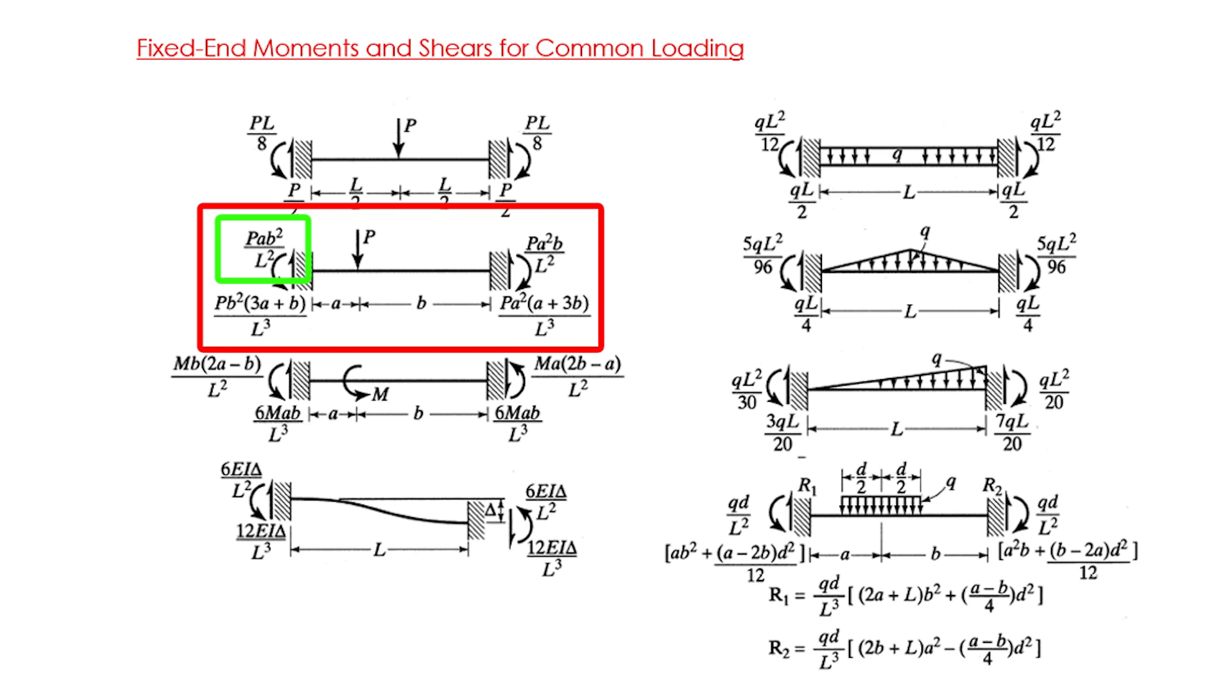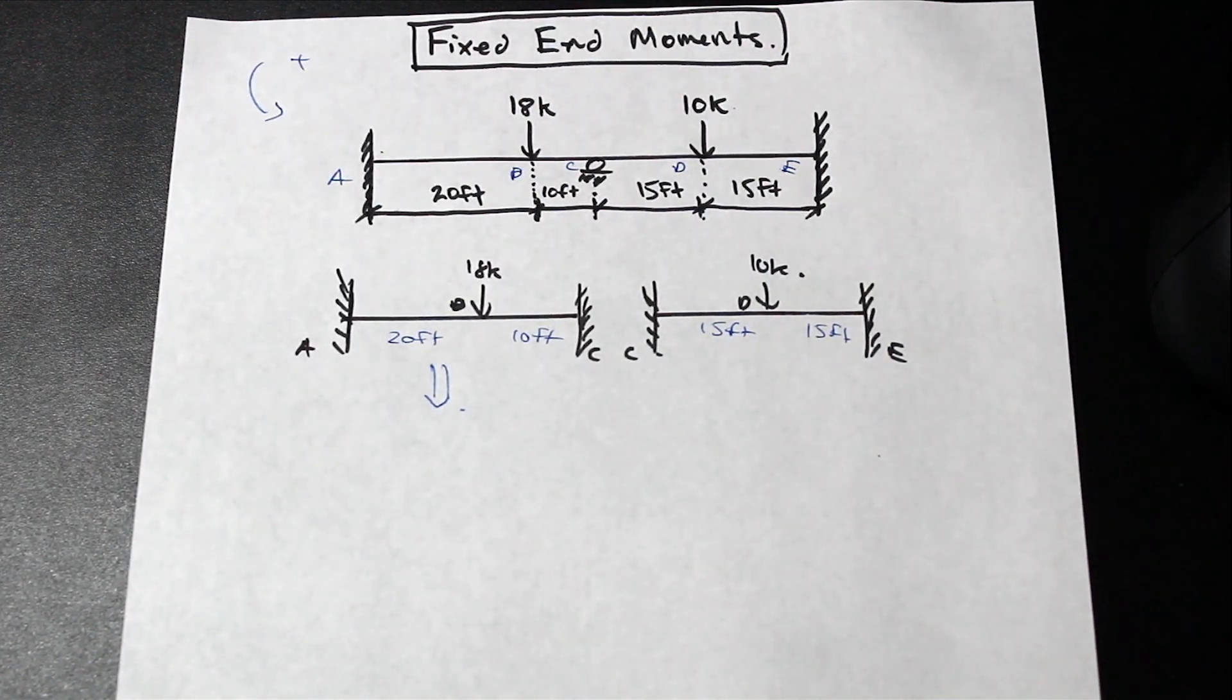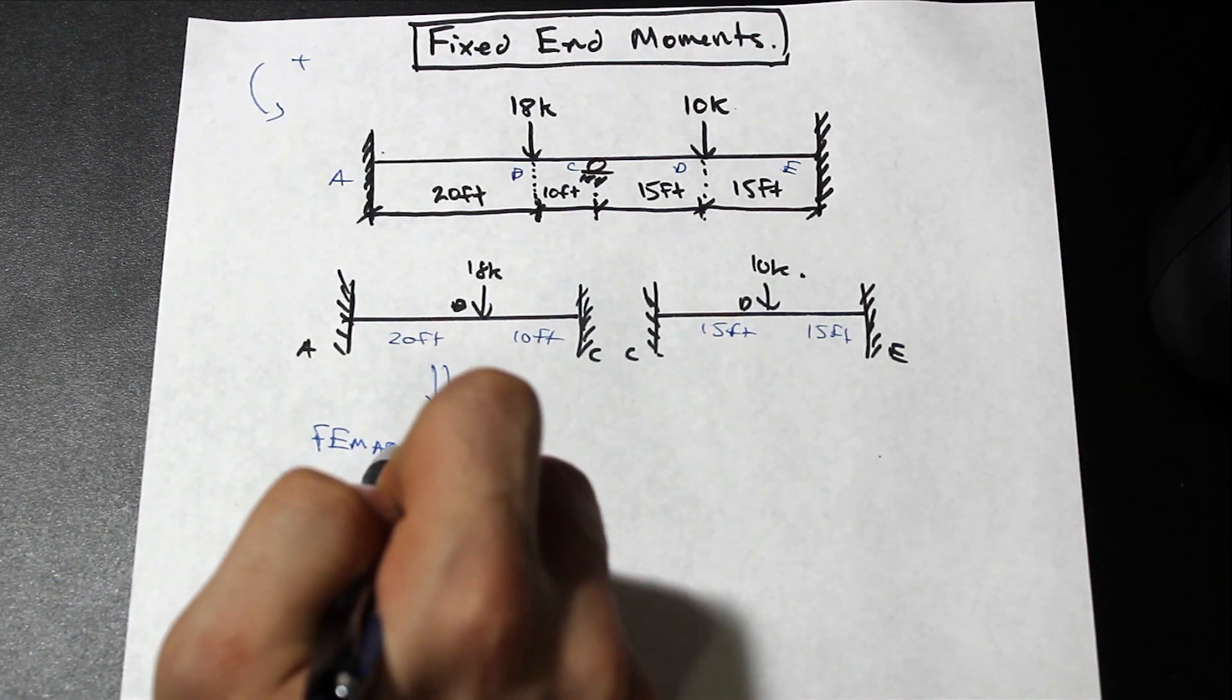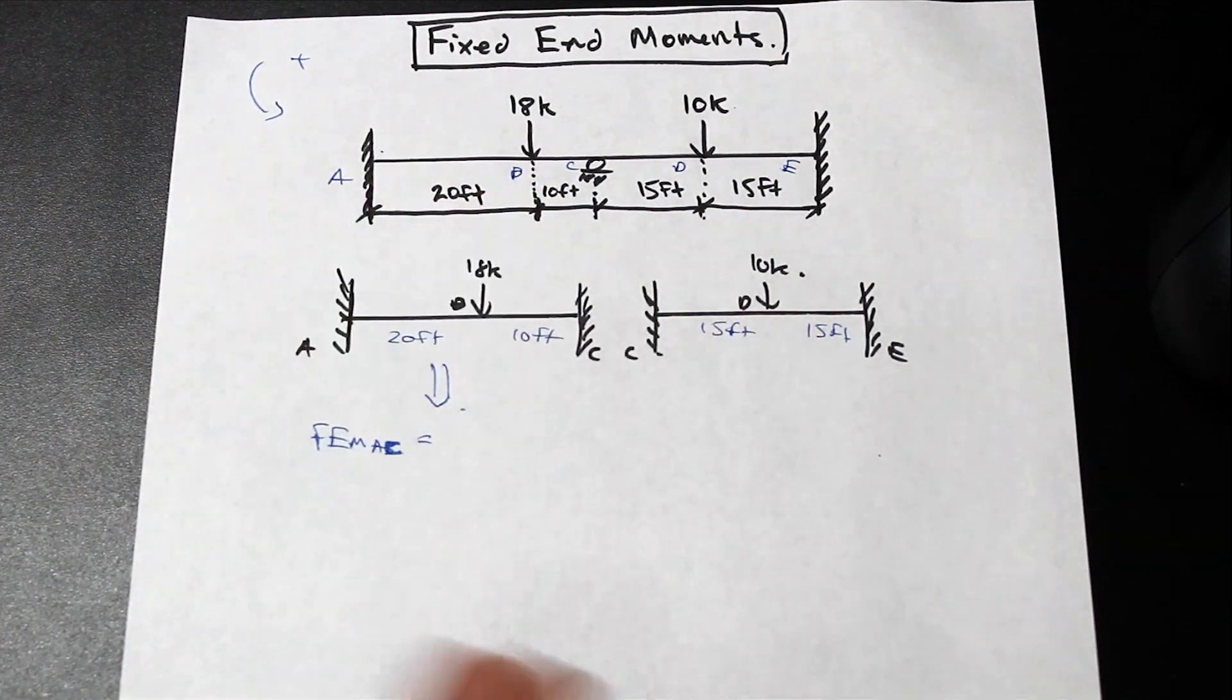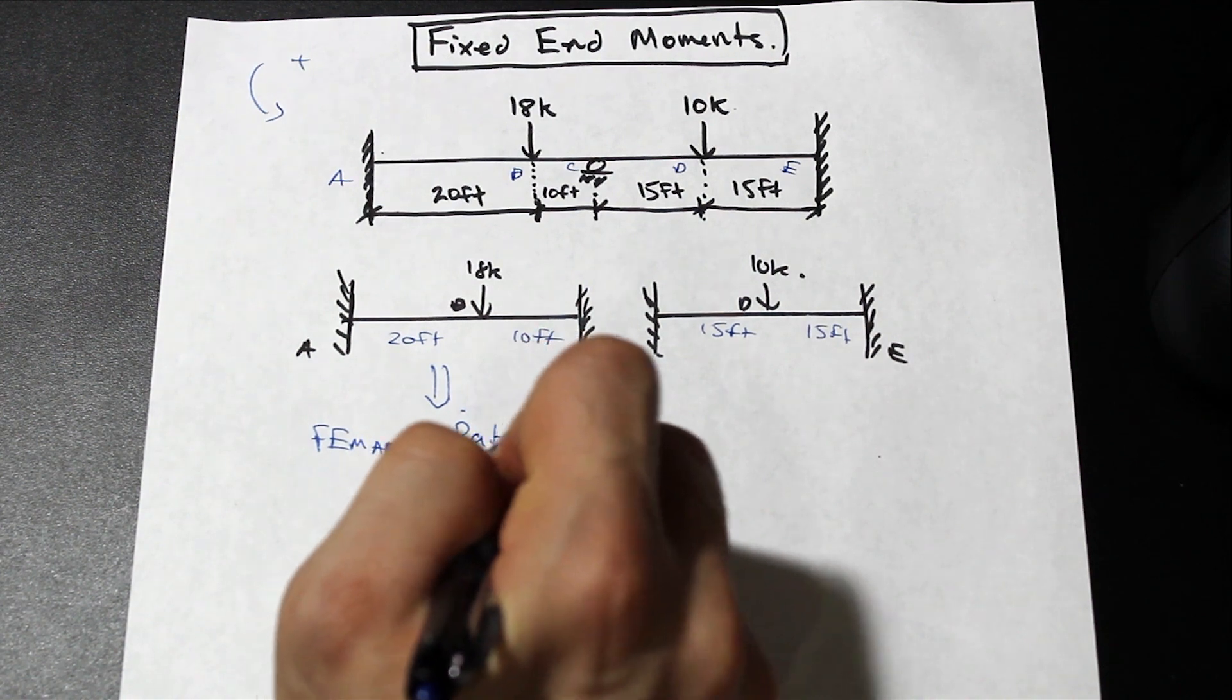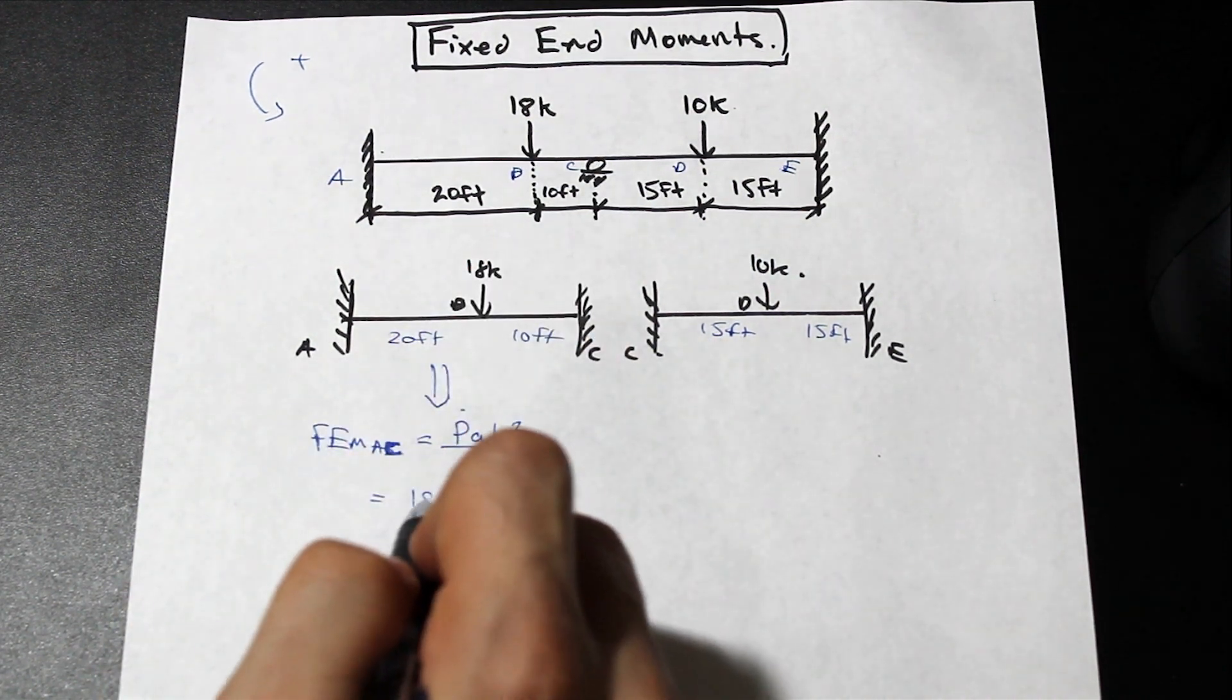That formula below is for the fixed end shear, that will be for other problems, but we're just going to do the moments for now. In these usually counterclockwise is positive, so that's the sign convention we're going to take. The fixed end moment, we're going to say fixed end moment of AC, so that means on the left, and then CA will be for the right. You can use a different sign convention if you want, that's what we're going to use here. That's going to be P a B squared over L squared.